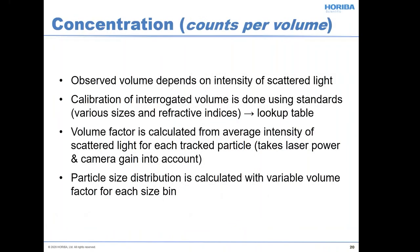Moving on to concentration, which has come up with a fair amount of interest when people look at virus-type samples. The challenge is that your observed volume actually depends on the intensity of scattered light. Your observed scattering volume is smaller for small particles that scatter weakly compared to large particles that scatter strongly. So you do need to do a calibration of observed volume as a function of particle size, and once you know that, we can calculate the size distribution with the correct scattering volume for each species or size.